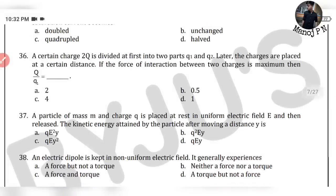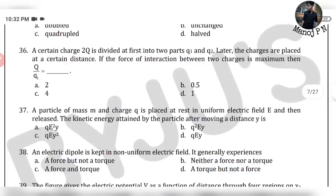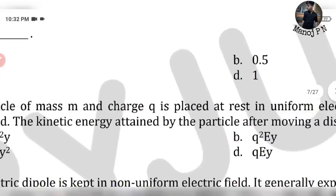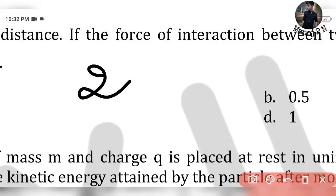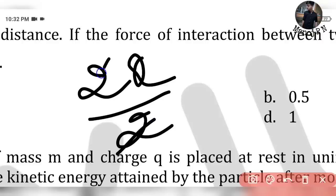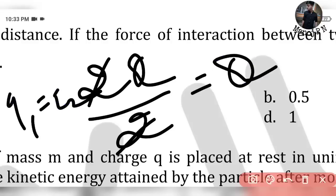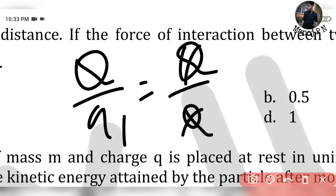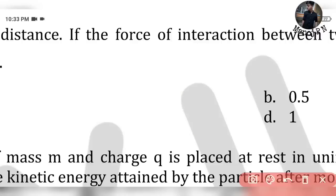36th question: A certain charge 2Q is divided into two parts Q1 and Q2. The charges are placed at a certain distance. If the force of interaction between the two charges is maximum, what are Q1 and Q2? For maximum force, divide equally: 2Q divided by 2 gives Q. So Q1 equals Q2 equals Q. That will be your answer — Option D.